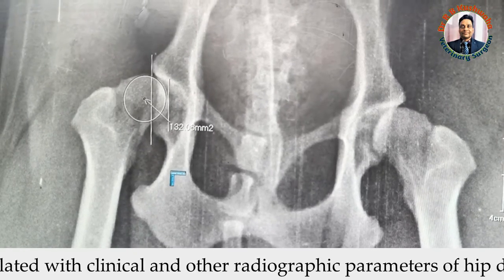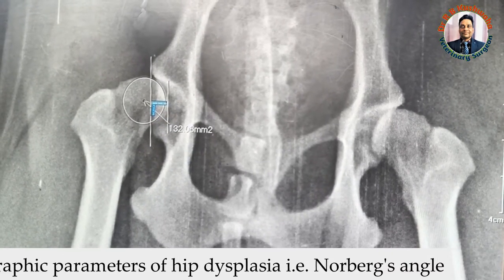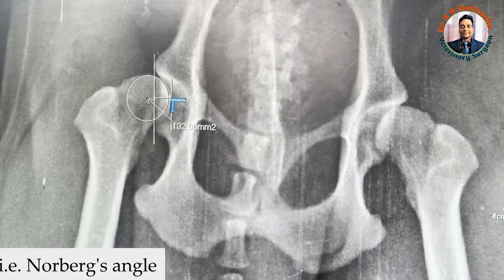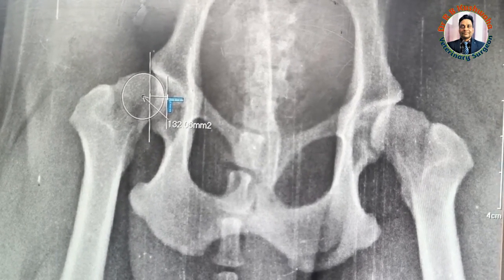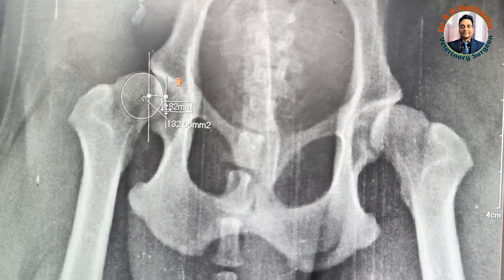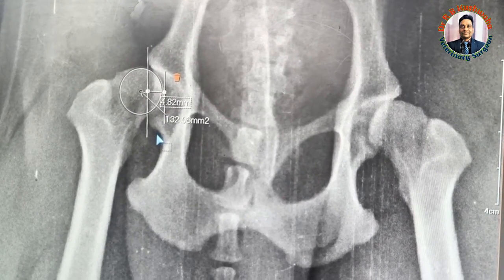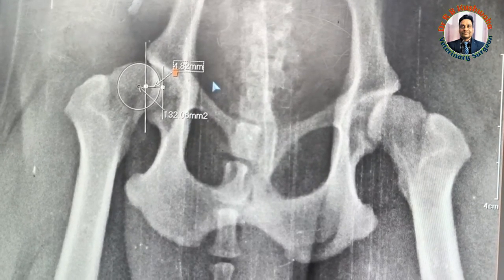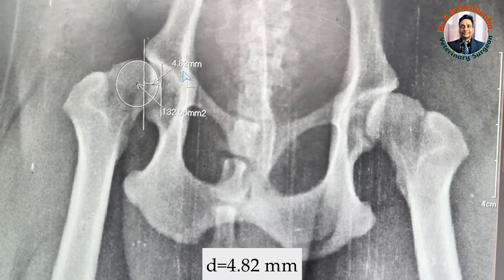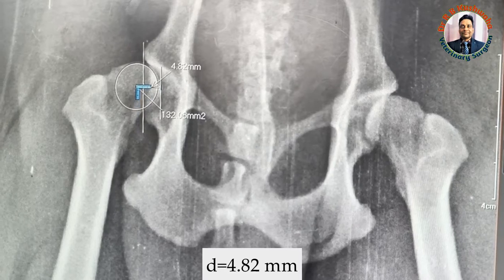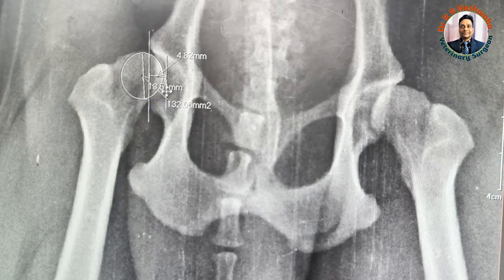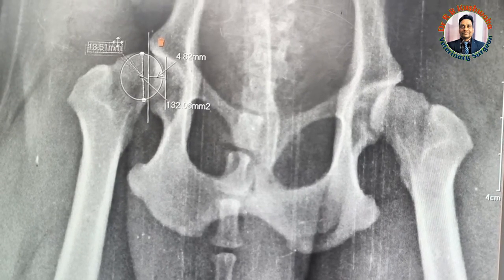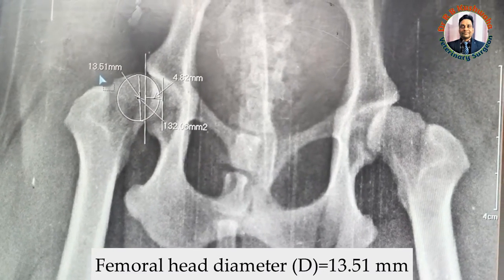The next step is to measure the distance between the line drawn from the cranial acetabular rim to the caudal rim and the line drawn at the inner surface of the femoral head. You can see this distance is 4.82 millimeters. We also measure the diameter of the femoral head, which comes to around 13.51 millimeters.